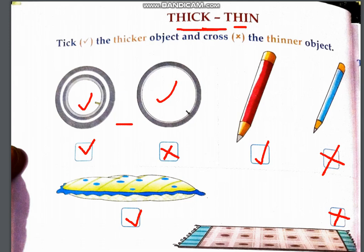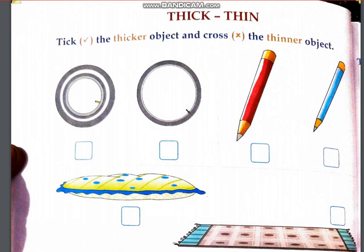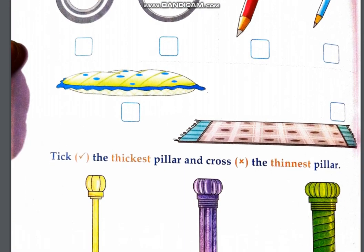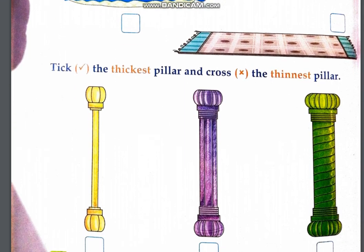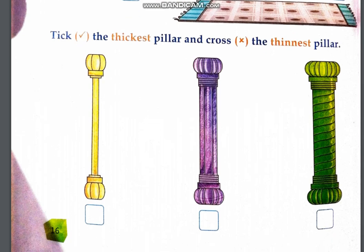We will tick the thickest pillar and cross the thinnest pillar. When we compare the thickness of three or more things, we can find the thickest and thinnest. Thickest means sabse mota. Thinnest means sabse patla. So which pillar is thickest? Third one. Thickest means sabse mota. Thinnest, which one? First pillar. Thinnest pillar.